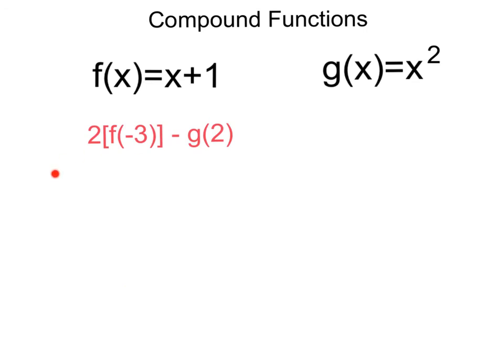Next up, we've got 2 times f of negative 3 minus g of 2. This time, we have two different function values that we need to account for. So let's go ahead and start with this f of negative 3. Now f of negative 3 refers to our f function right here. So we're just going to be negative 3 plus 1, which is going to be a value of negative 2.